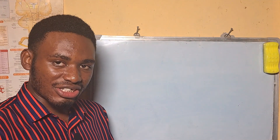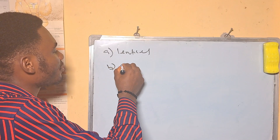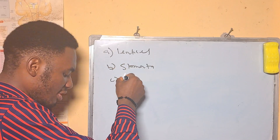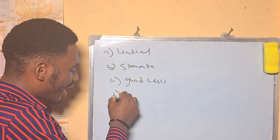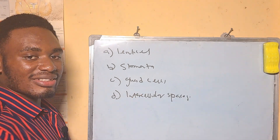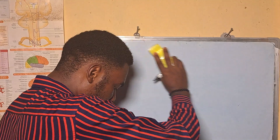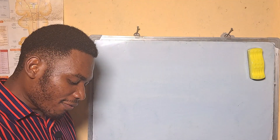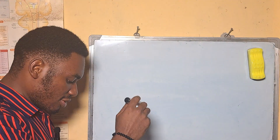During respiration, air circulates around plant tissues via — A: leafy cells, B: stomata, C: guard cells, D: intercellular spaces. Our answer is D, intercellular spaces.